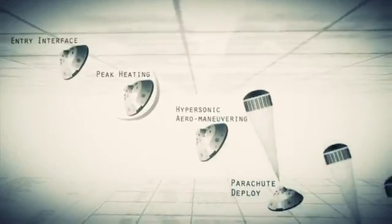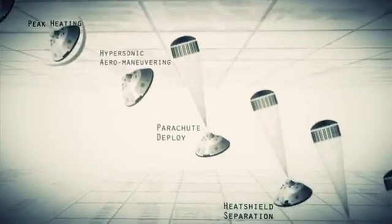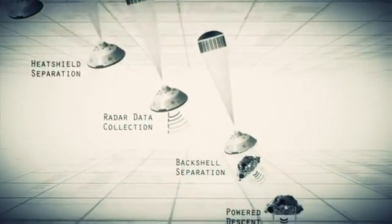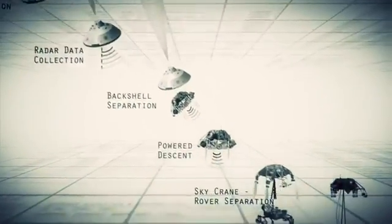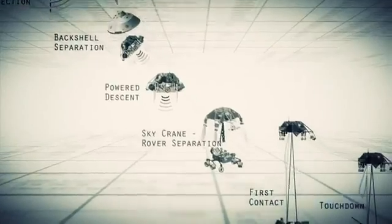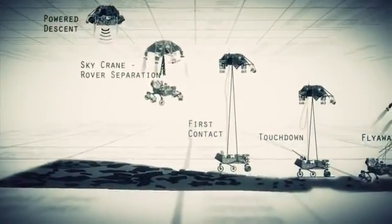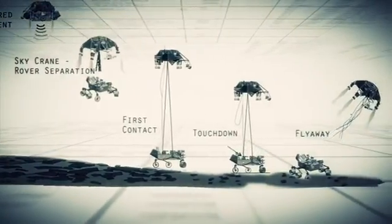Entry, descent, and landing, also known as EDL, is referred to as seven minutes of terror because we've got literally seven minutes to get from the top of the atmosphere to the surface of Mars, going from 13,000 miles an hour to zero, in perfect sequence, perfect choreography, perfect timing, and the computer has to do it all by itself with no help from the ground. If any one thing doesn't work just right, it's game over.